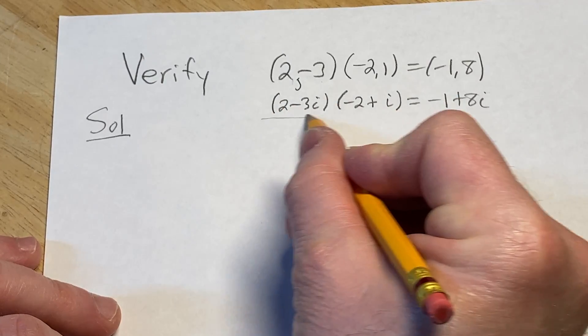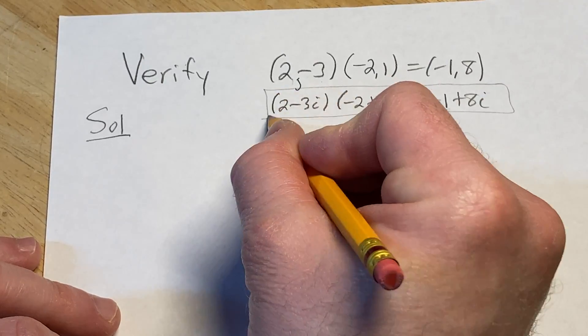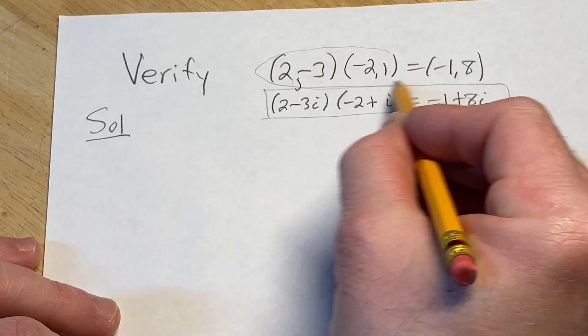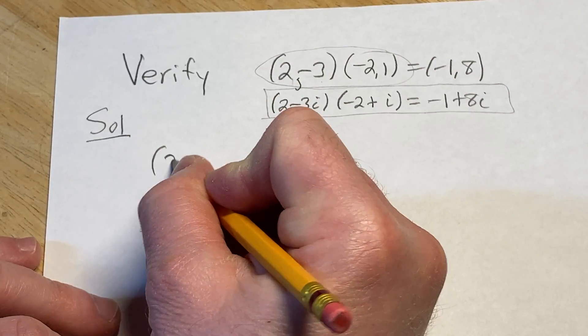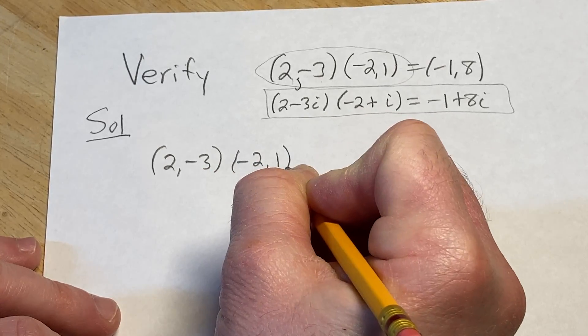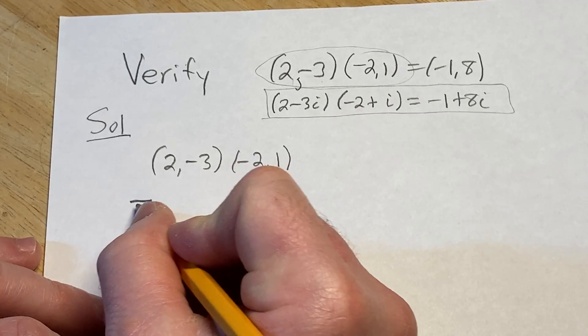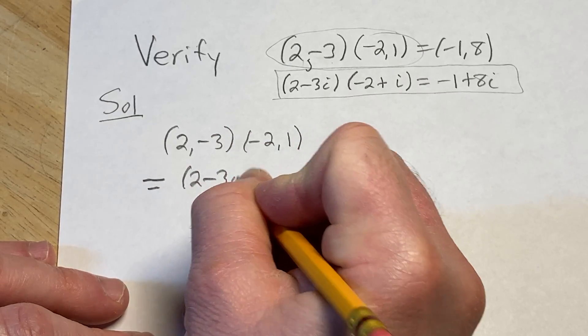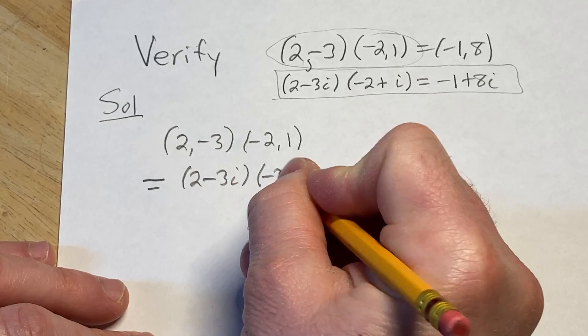So we basically have to verify this product. This product is equal to this complex number. Let's go ahead and start by writing down the left-hand side. So 2 negative 3 times negative 2 1, and let's go ahead and write this the way that people usually see it, which is 2 minus 3i times negative 2 plus i.